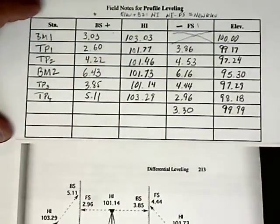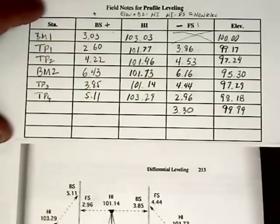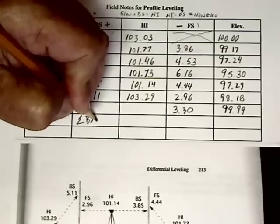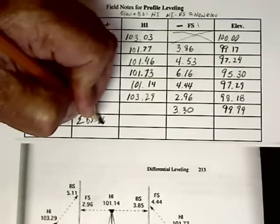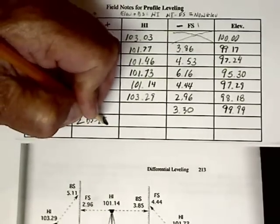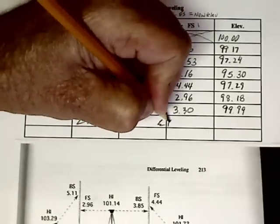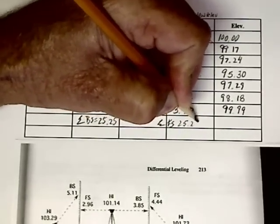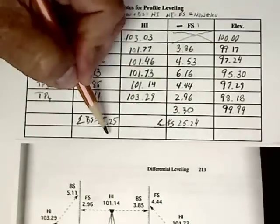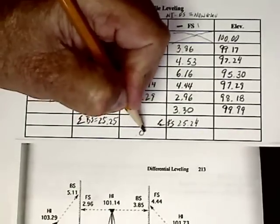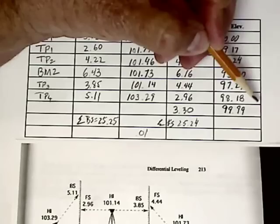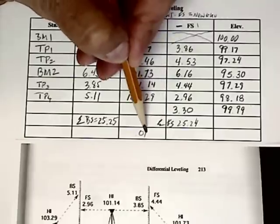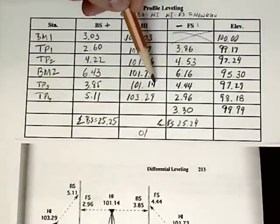We need to do a little math yet. We sum up the back sights, which add up to 25.25, and sum up the foresights, which add up to 25.24. The difference between those two is 0.01, and the difference between our starting and ending elevations is 0.01 as well. That tells us that we didn't make any math errors.